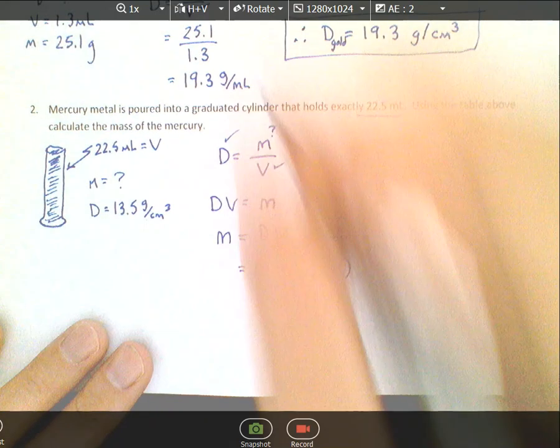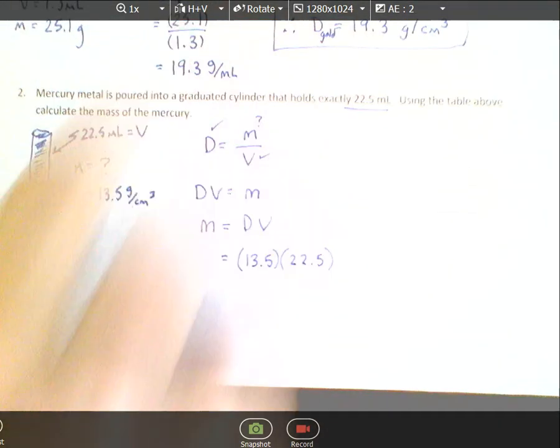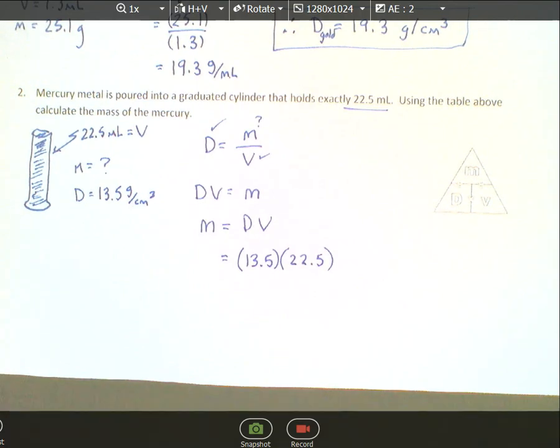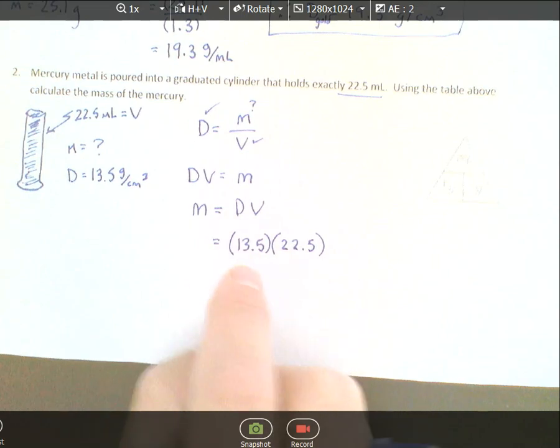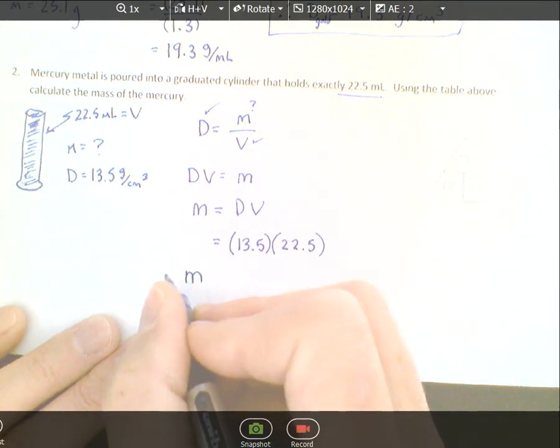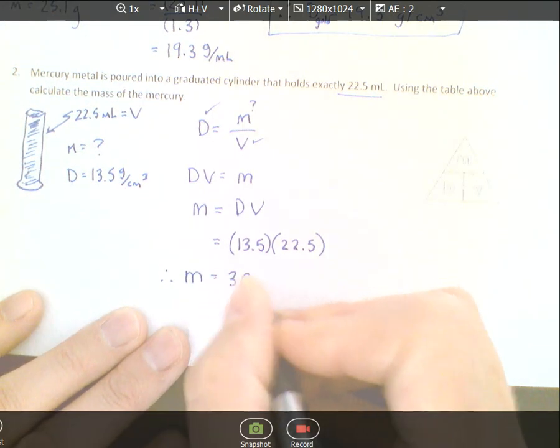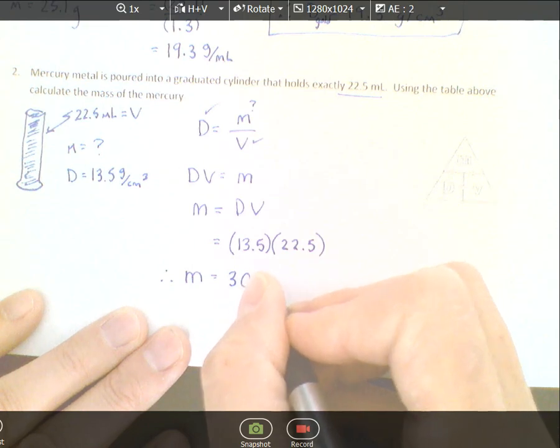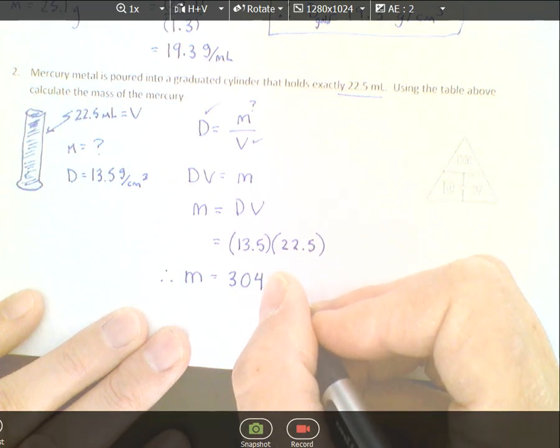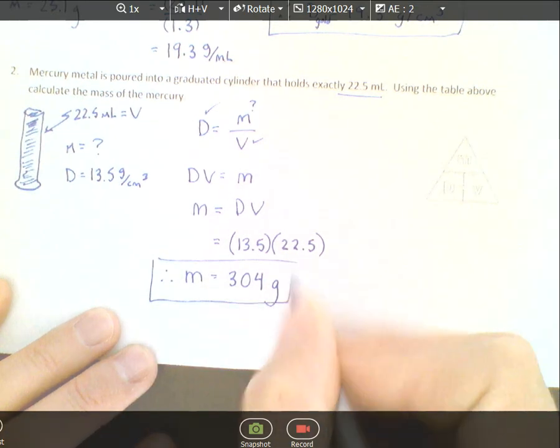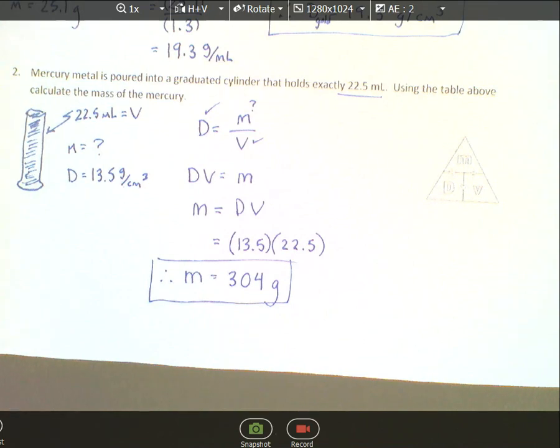Our density was 13.5, our volume was 22.5. Since that's milliliters, it's the same as cubic centimeters, so the units work out into grams. When substituting numbers for variables, include brackets. This helps in the future for questions with negative values. Get used to doing that now. Put it into your calculator and we get about 304 grams. It was actually 303.75, rounded to 304 grams.